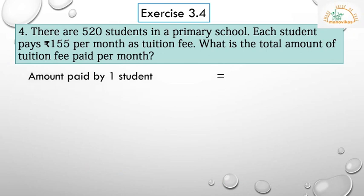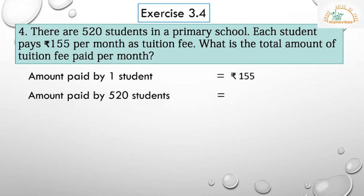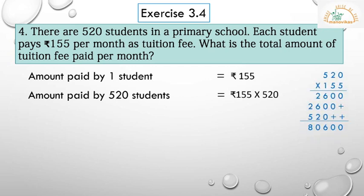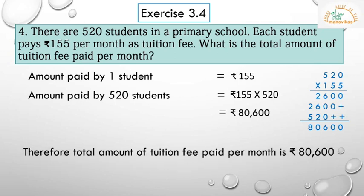Here is the solution. Amount paid by one student is rupees 155. Second statement: amount paid by 520 students is equal to rupees 155 multiplied by 520. After the calculation we get 80,600. Therefore, the total amount of tuition fee paid per month is rupees 80,600.